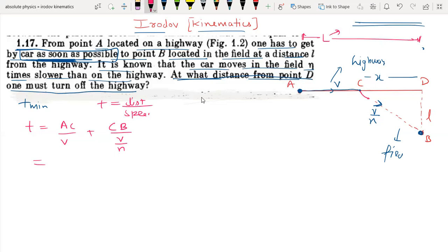The complete distance - I can write this as L minus X, because this is L minus X. So AC is L minus X upon V.